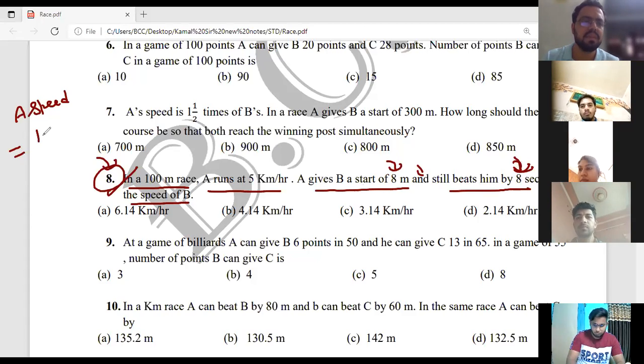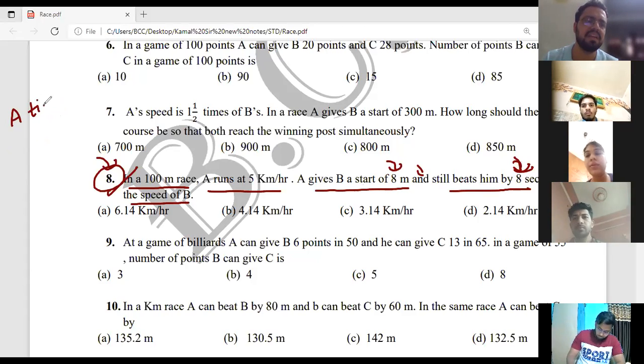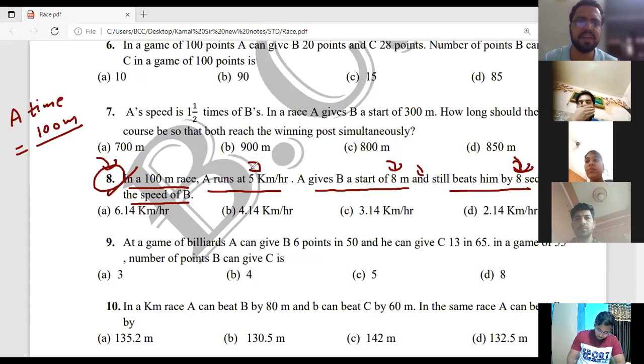A's time: A gives B an 8 meter start and beats B by 8 seconds. We need to calculate A's time for the race.